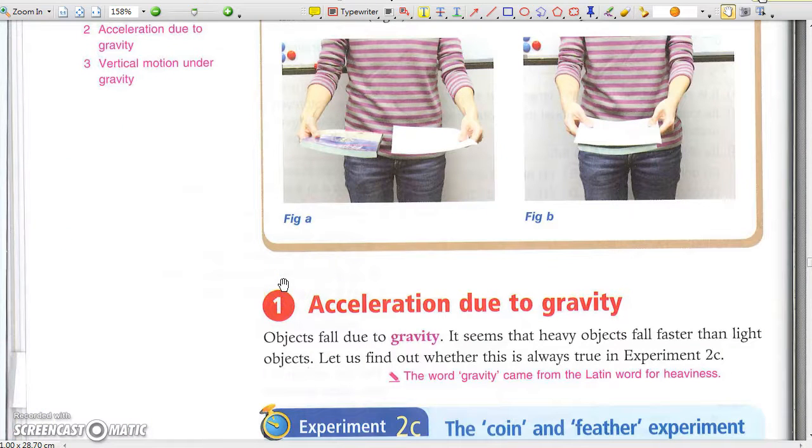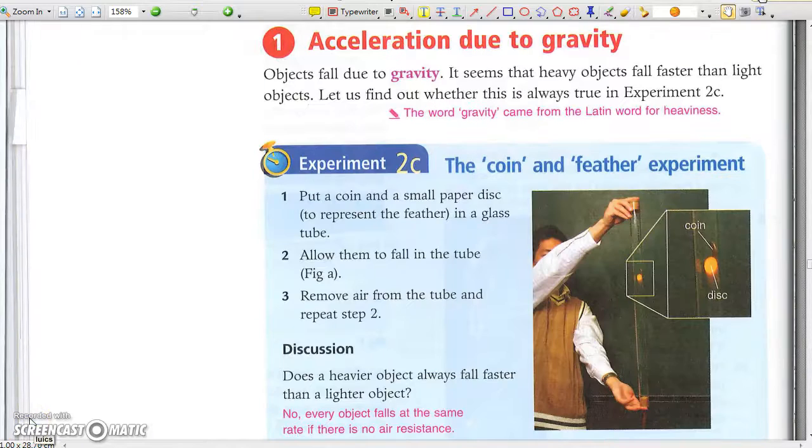1. Acceleration due to gravity. Why does the piece of paper fall at the same rate as the book in figure B? Because there is little air resistance acting on it. The coin and feather experiment shows that different masses fall at the same rate when there is no air resistance.